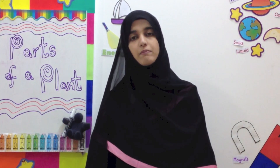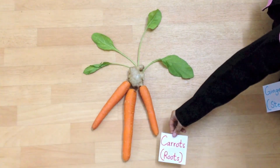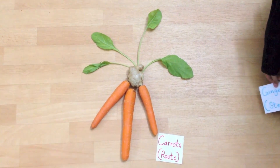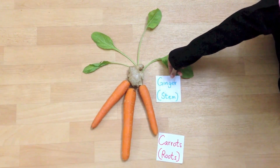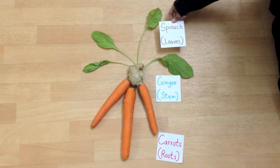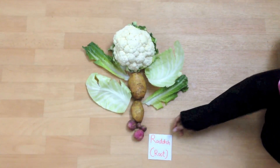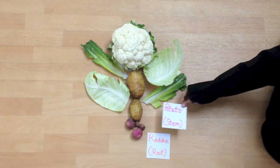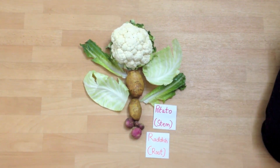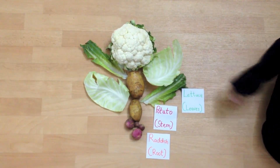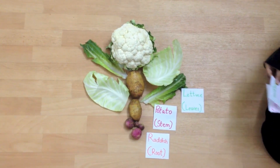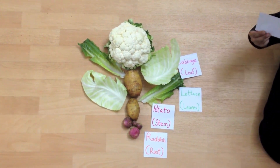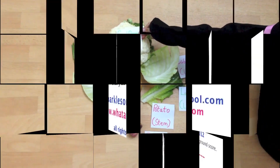Now I am going to use vegetables to do an activity. I am going to make a plant so that you can remember which vegetable is which part of a plant. Carrots are roots. Ginger is a stem and spinach are leaves. Radish are roots. Potato is a stem. Lettuce are leaves and cabbage are leaves as well. Cauliflower is a flower.